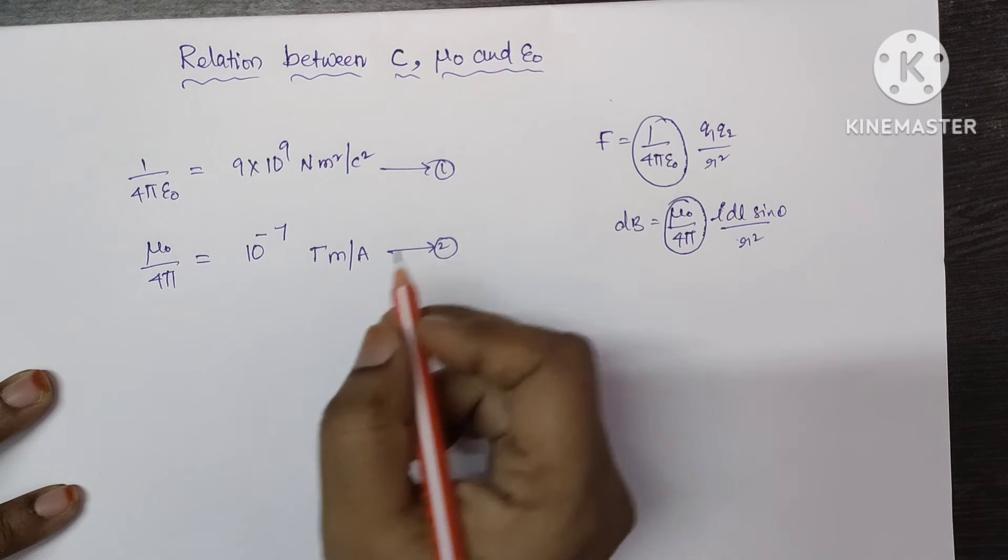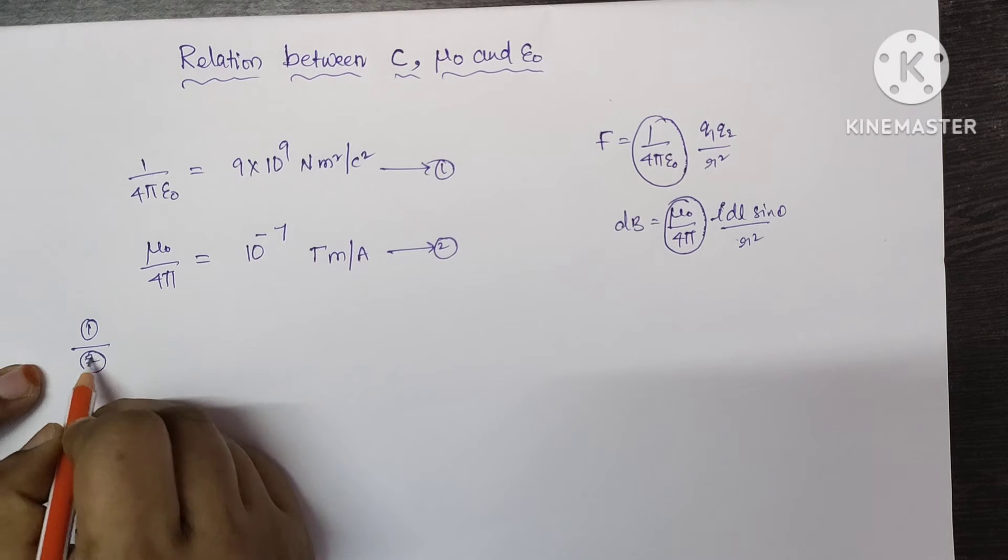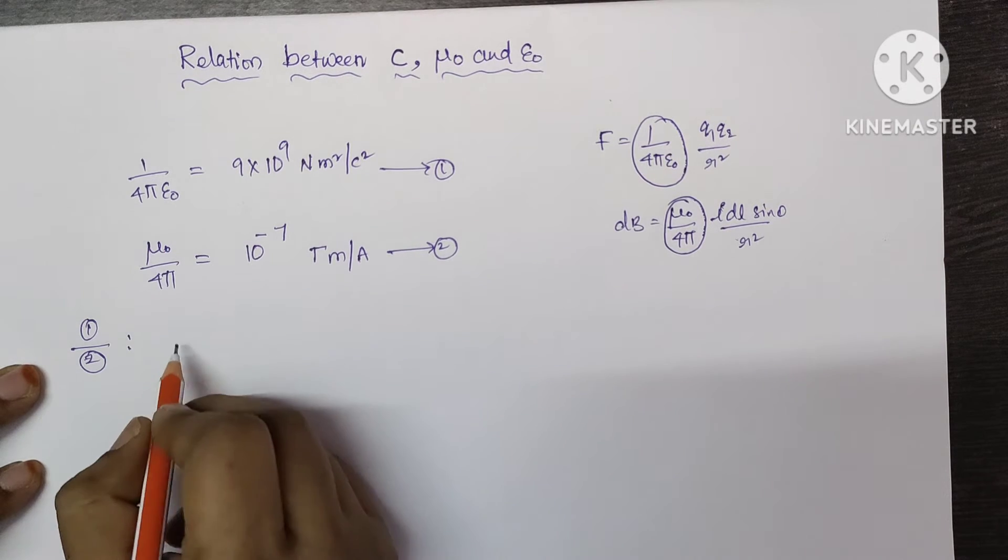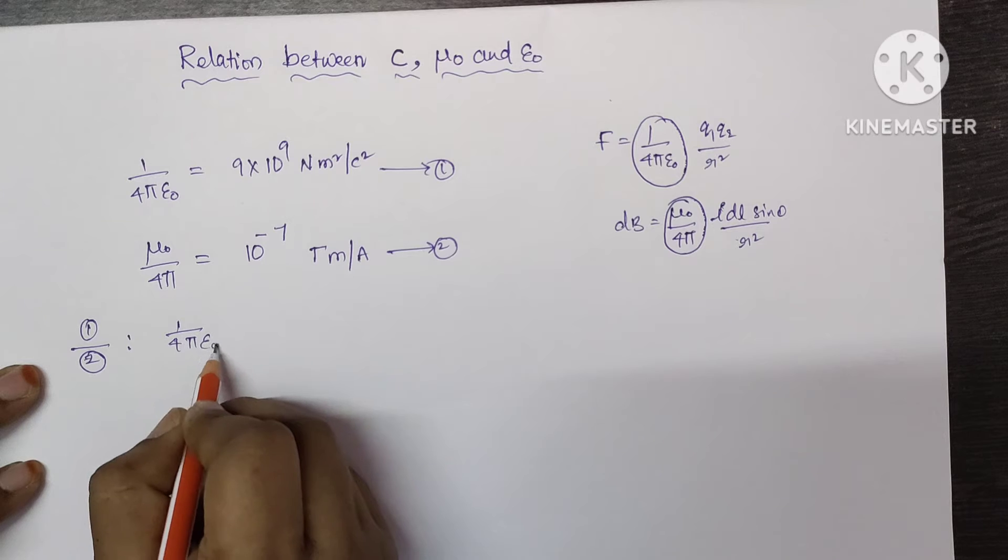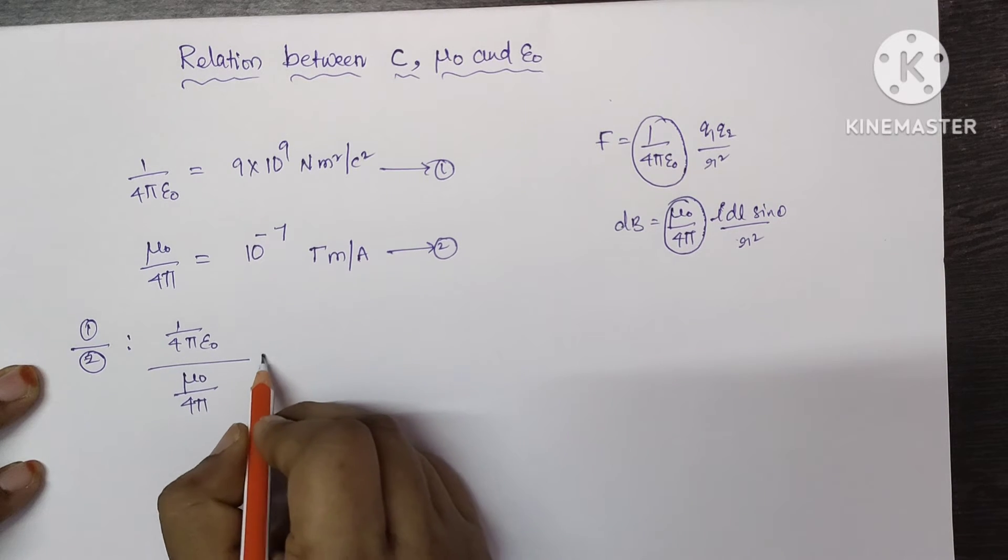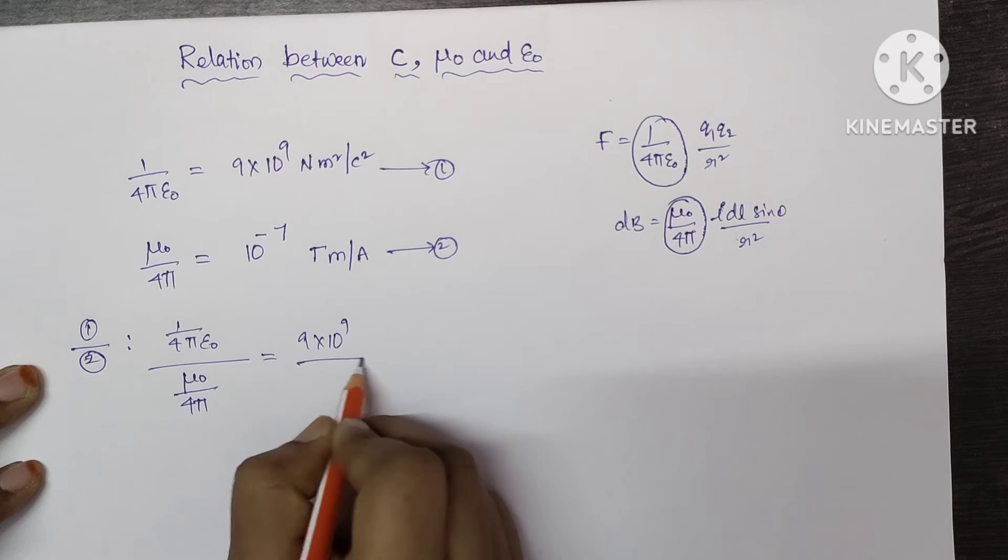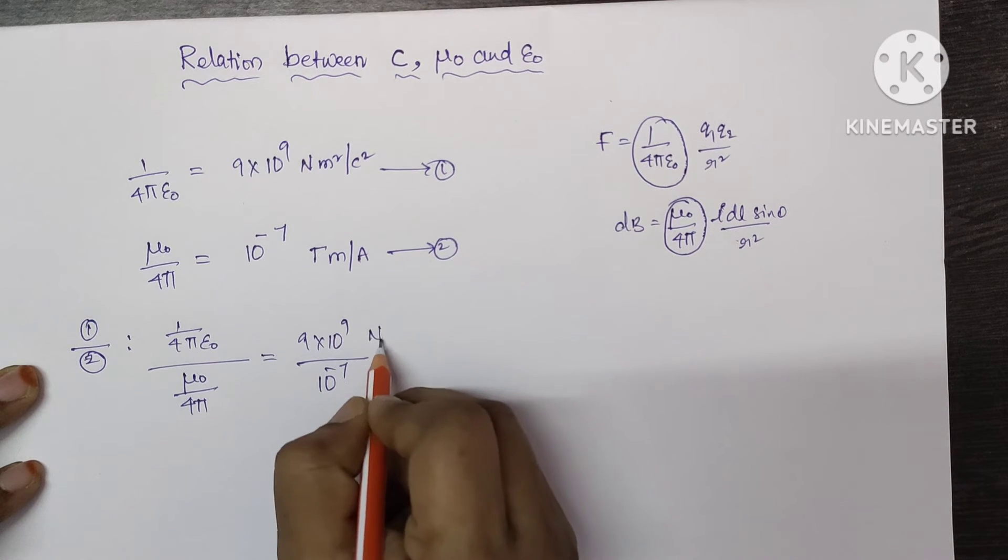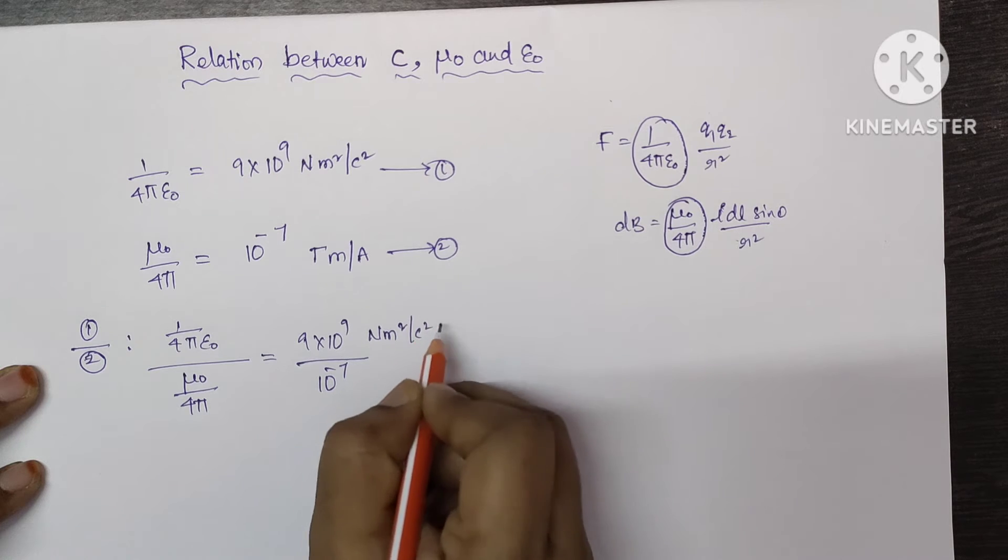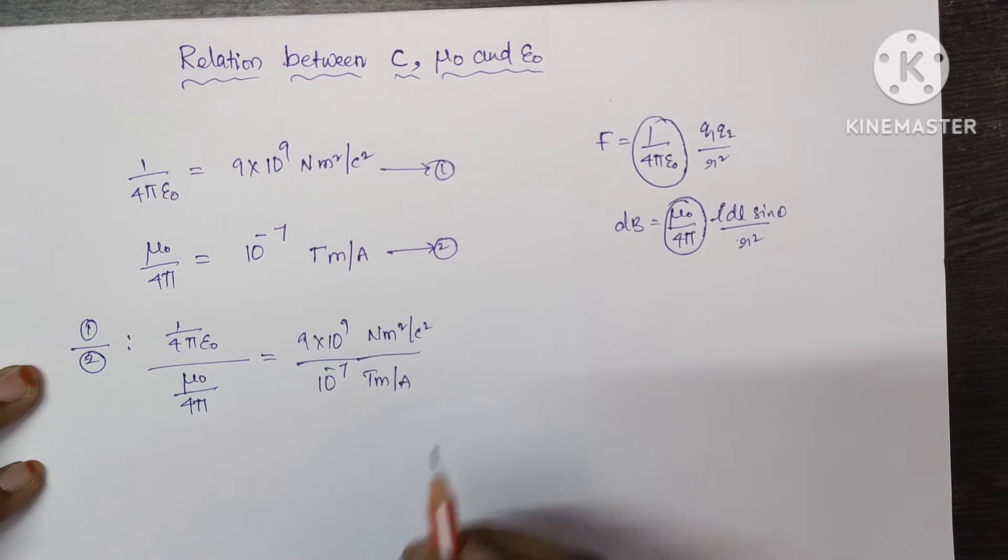Let it be equation number 2. Divide equation number 1 with 2. So what happens here, 1 by 4 pi epsilon 0 divided by mu 0 by 4 pi, which is equal to 9 into 10 power 9 divided by 10 to the power of minus 7. Here units are Newton meter square per Coulomb square and here the units tesla meter per ampere.